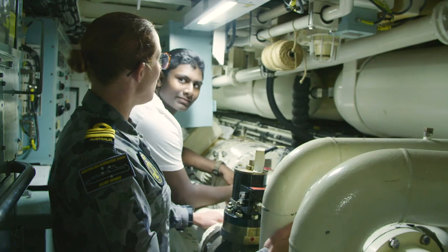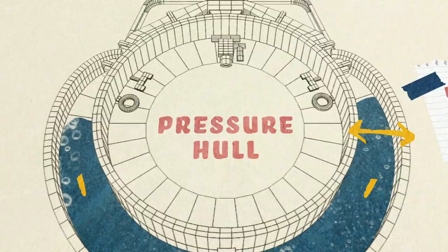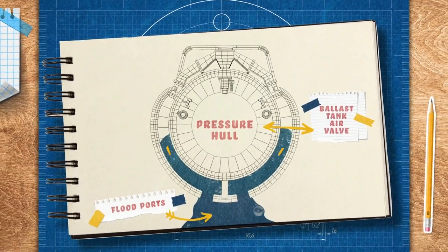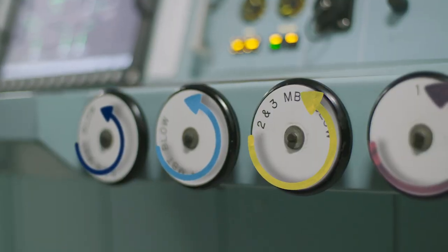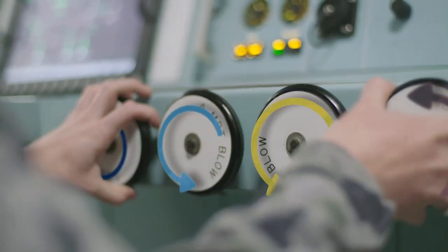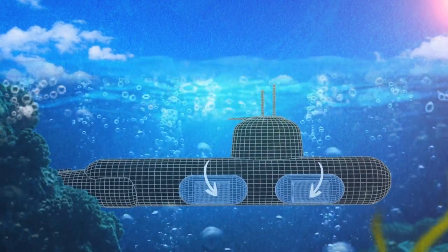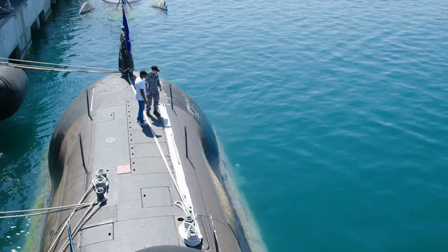How do you get the water back out when it's time to resurface? We store compressed air on board, which is allowed into the tanks. This forces water out of the flood valve at the bottom and decreases the submarine's density. These hand wheels control the compressed air on board — opening them up allows air into the tank and causes the submarine to resurface. When we want to stay on the surface, the ballast tanks are pumped dry and sealed so that we achieve full buoyancy.